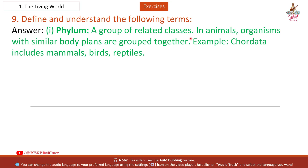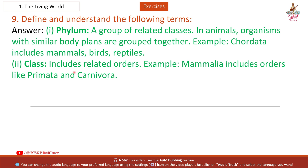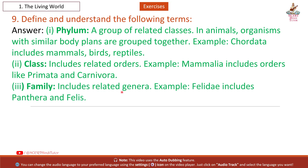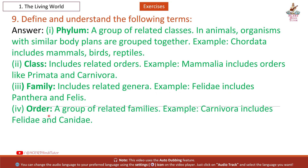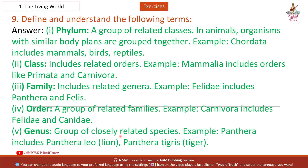Question 9: Define the following terms. 1. Phylum: A group of related classes in animals; organisms with similar body plans are grouped together. Example — Chordata includes mammals, birds, reptiles. 2. Class: Includes related orders. Example — Mammalia includes orders like Primata and Carnivora. 3. Family: Includes related genera. Example — Felidae includes Panthera and Felis. 4. Order: A group of related families. Example — Carnivora includes Felidae and Canidae. 5. Genus: A group of closely related species. Example — Panthera includes Panthera leo (lion) and Panthera tigris (tiger).